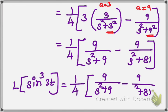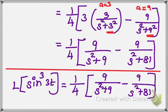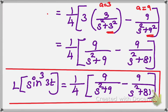This is the final answer. We derived it using the formula sin 3t = 3 sint − 4 sin³t. Okay, thank you.